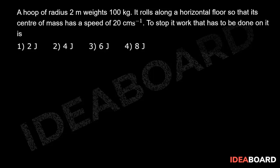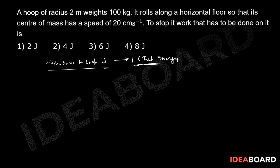A hoop of radius 2 meters and mass 100 kg rolls along a horizontal floor so that its center of mass has a speed of 20 centimeters per second. To stop it, work has to be done on it. The work done to stop it signifies how much energy it possesses — that means total kinetic energy. If you have total kinetic energy k, you need to work against k in order to make its energy zero.